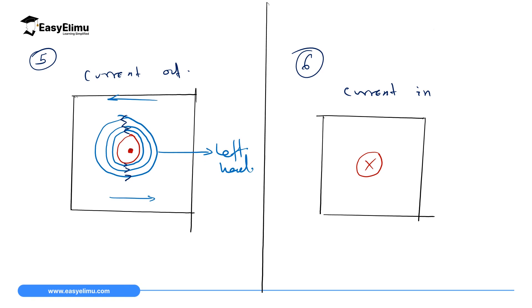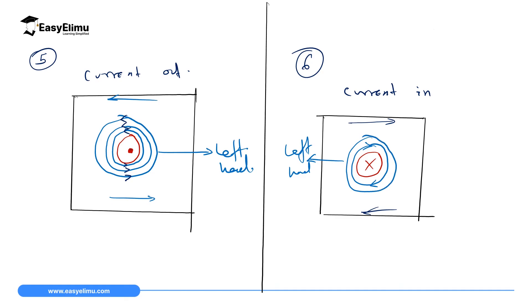Now example six: you are swimming into the screen. This is a wire which represents current penetrating into the screen. If you swim into the screen, your left hand will deflect in this direction. Below the wire the magnetic field moves to the left, and above the wire it moves to the right. Drawing a second field line: below the wire it moves that way, and above moves the other way. Drawing a third field line: below the wire it moves like that, and above the wire it moves like that.